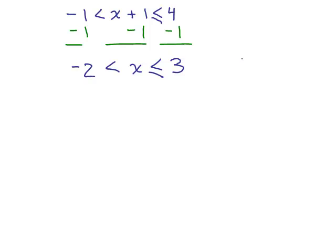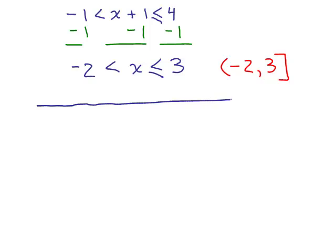So I'm looking for numbers between negative 2 and 3, with less than or equal to 3. My answer in interval notation will be (-2, 3]. If you graph it on a number line, here's negative 2, here's 0, and we go between negative 2 up to and touching 3.